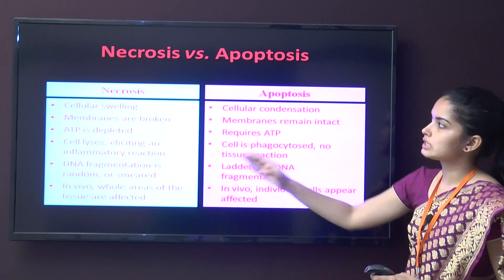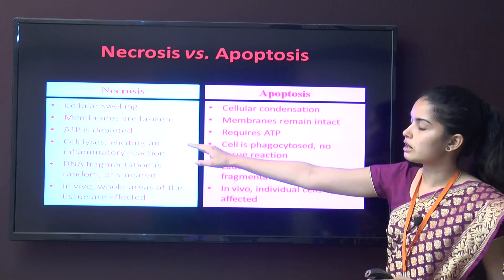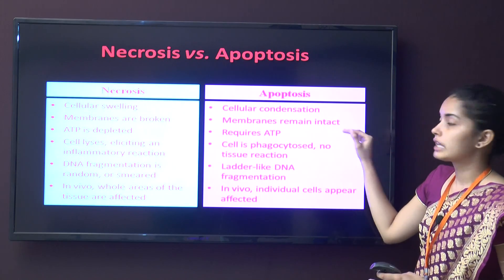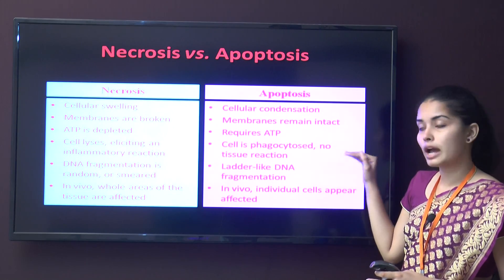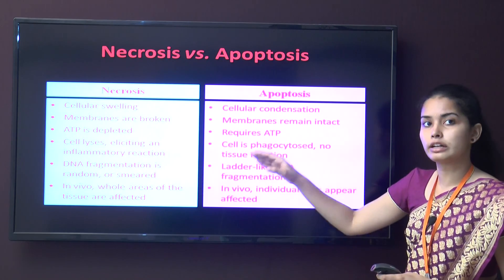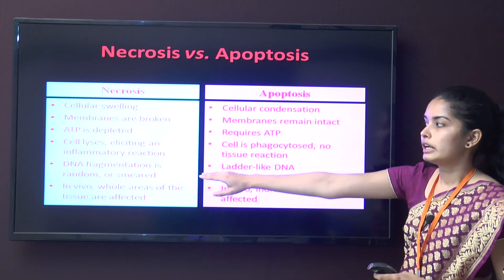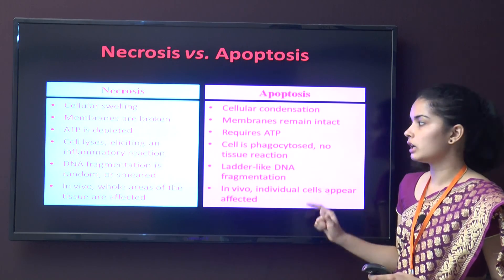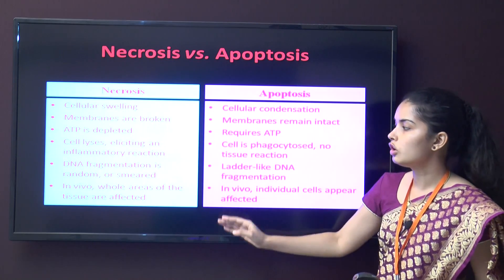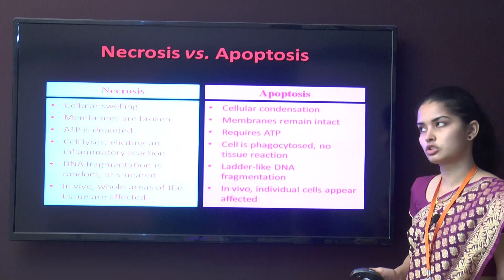Comparing apoptosis and necrosis: in necrosis, cellular swelling occurs, cell membranes are broken, and ATP is depleted; in apoptosis, cellular condensation occurs, cell membrane remains intact, and ATP is required. Necrosis results in cell lysis and inflammatory reaction; apoptosis results in cell phagocytosis with no tissue reaction. DNA fragmentation in necrosis is random (smear), while in apoptosis it is ladder-like. In vivo, necrosis affects whole areas of tissue while apoptosis affects individual cells.